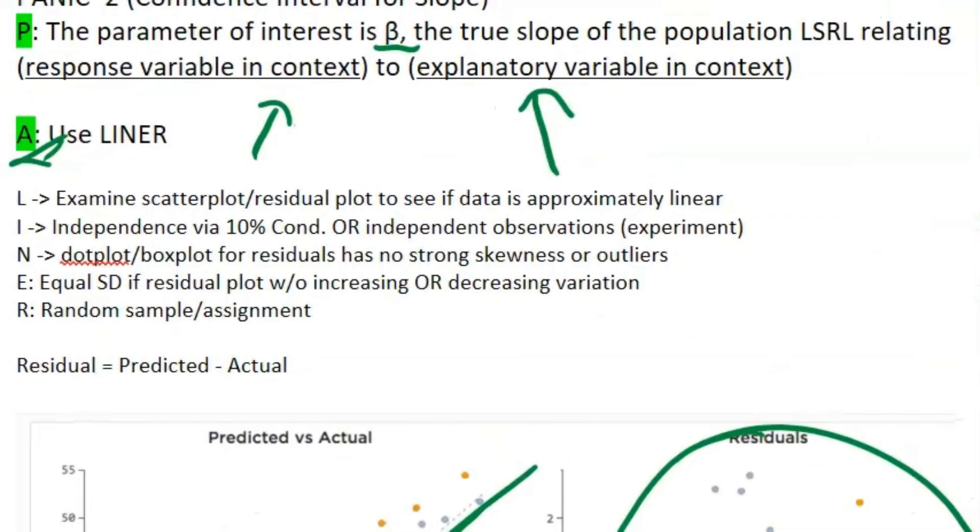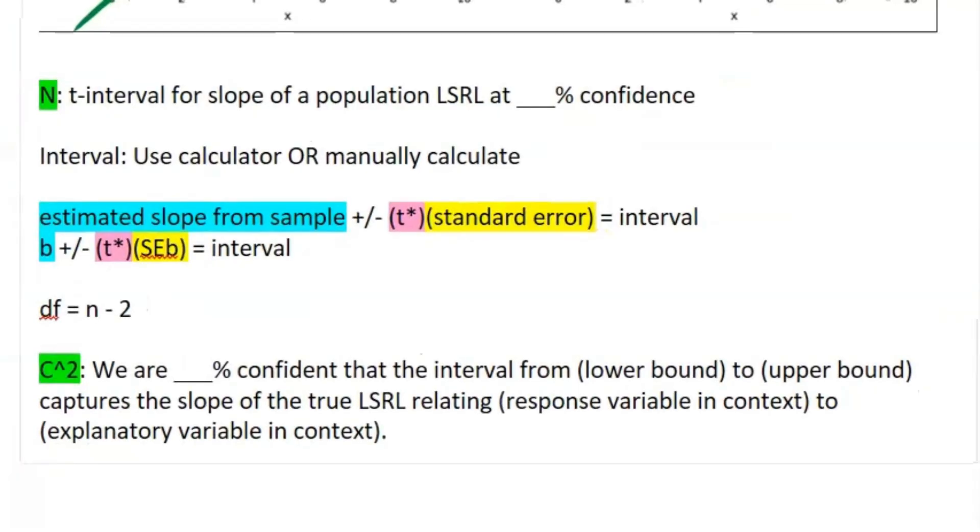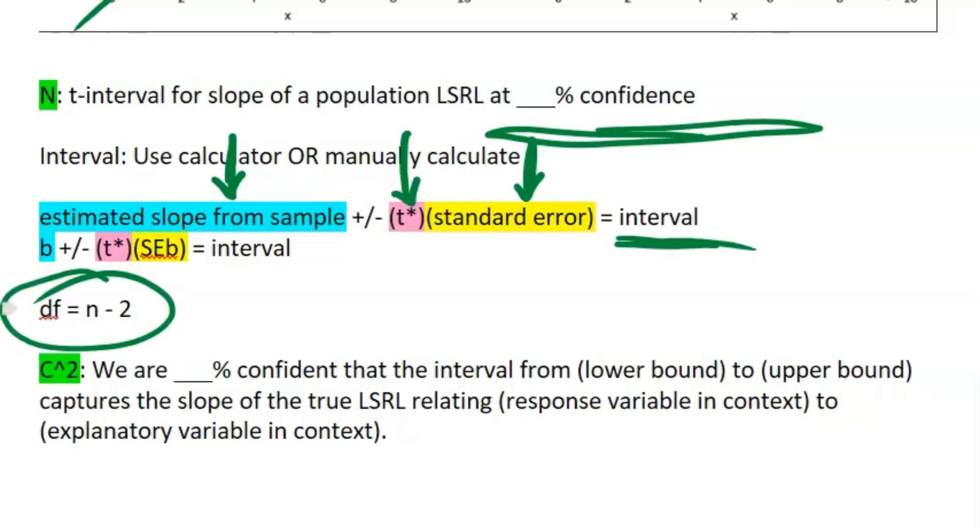The last condition is just you need random samples or assignment if it's an experiment. Let's move on to the name of the test: t-interval for slope of a population least squares regression line at blank percent confidence. Usually that confidence is given to you. To calculate the interval, the actual interval, you can either use your calculator or manually calculate it. That is estimated slope from your sample b plus or minus your critical t* value times that standard error. That formula usually is given to you directly in the problem, but you can also calculate with the formula on your reference table. That will equal your interval, and just keep a note: degrees of freedom is n minus 2.